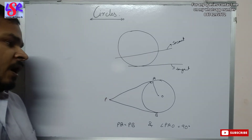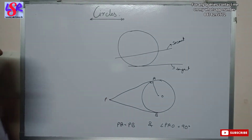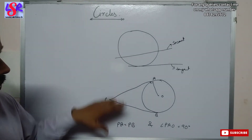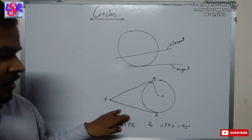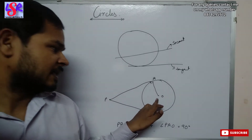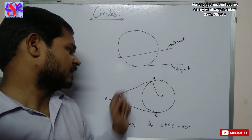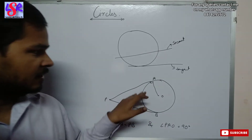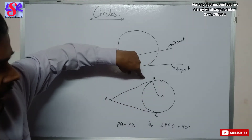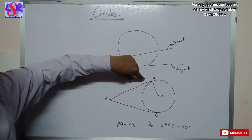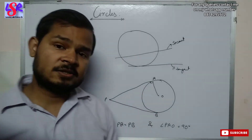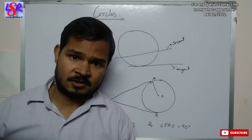That means if we draw two tangents to the circle from any external point, the tangent lengths are equal and the tangent is always perpendicular to the radius of the circle.